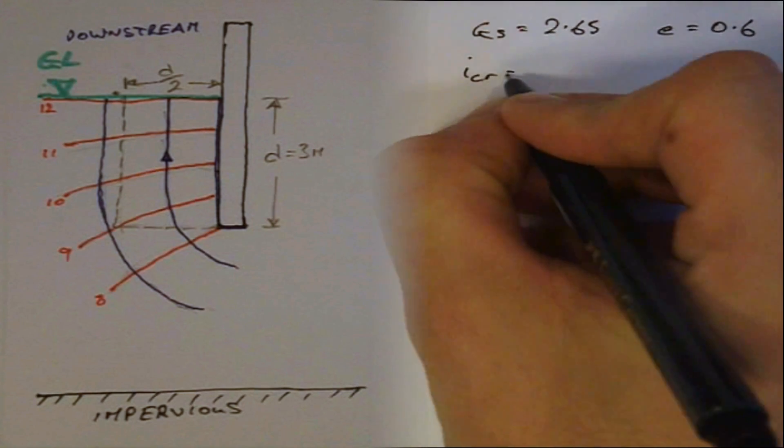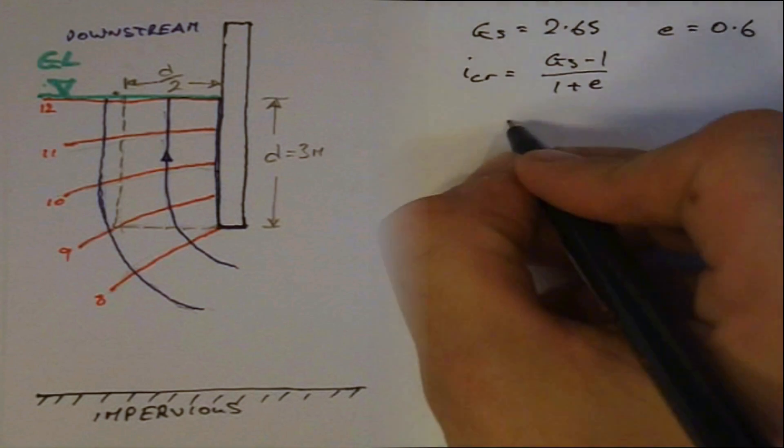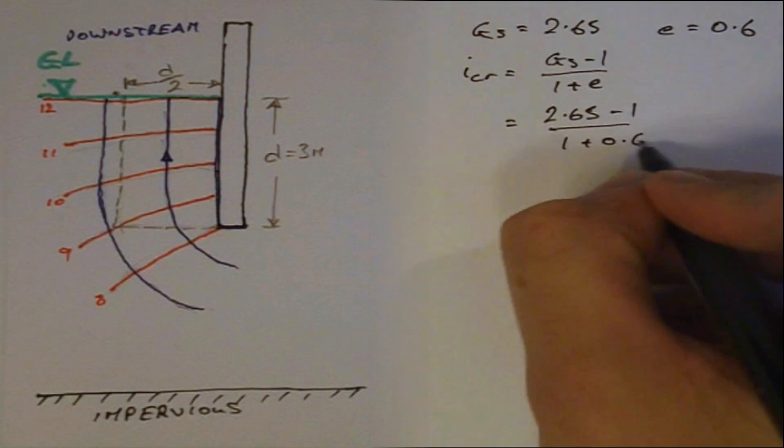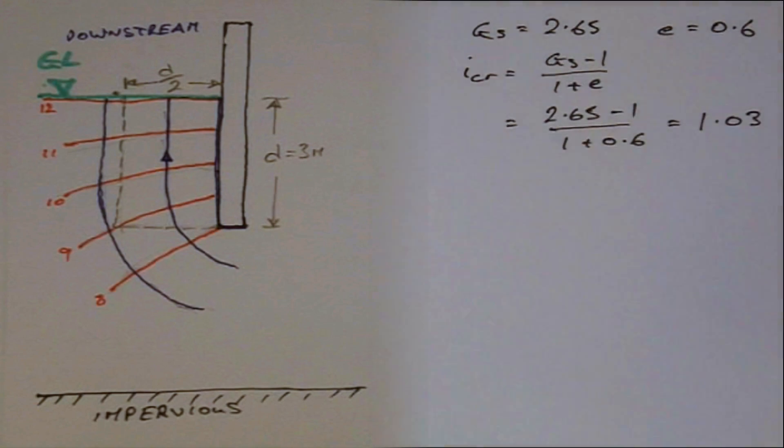Firstly, we calculate ICR by substituting the values for GS and E into our relationship for the critical hydraulic gradient derived earlier. This gives us ICR equal to 1.03.